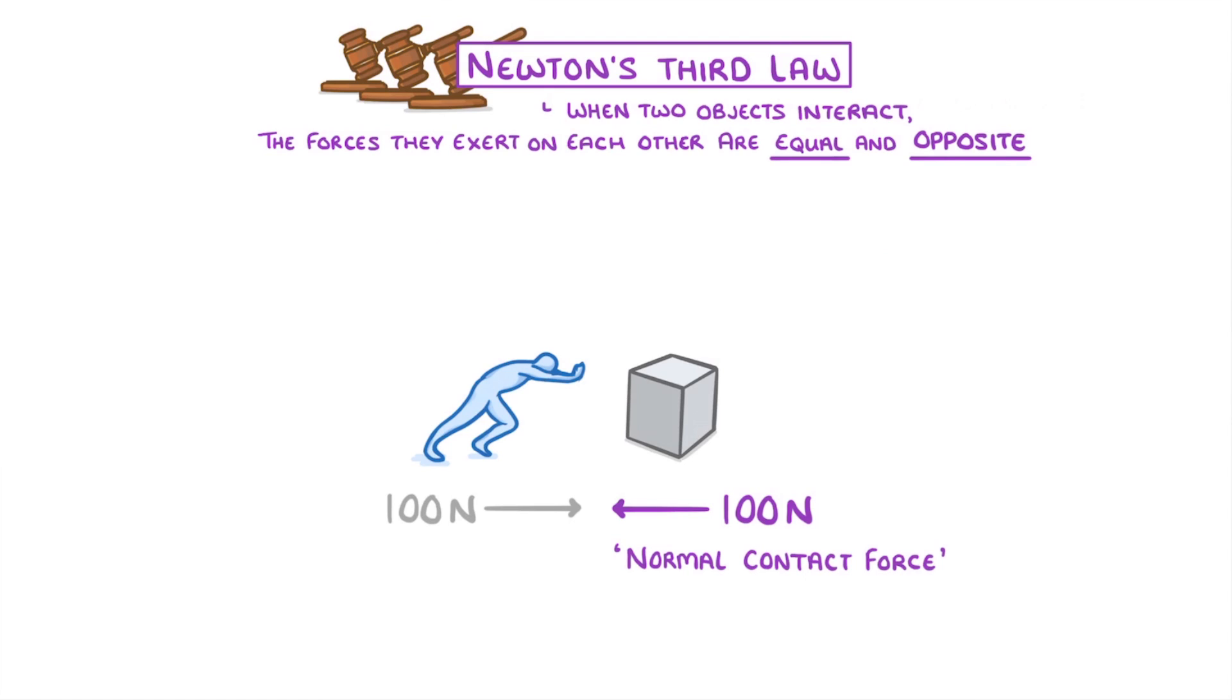You don't need to know the details of what determines which object will move. But in general, you can think of it in terms of Newton's second law equation, F equals ma. If we rearrange it to get acceleration, we can see that it's equal to force divided by mass.